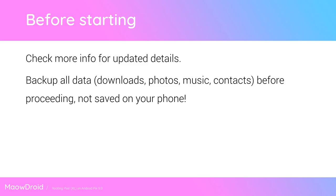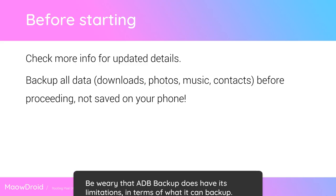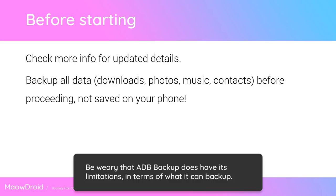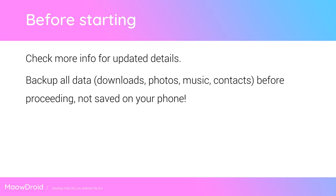A popular way to do this without root access is using ADB backup and manually copying things over using the MTP protocol — just plug in your phone and transfer stuff to your computer — or you can use ADB pull. Just make sure you get everything off your phone onto your computer that you might need. Things like app data and apps themselves are a bit tricky to do without root access, so you may be a bit limited in that respect.